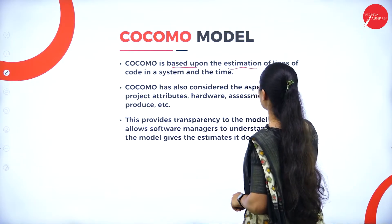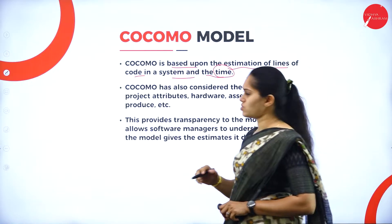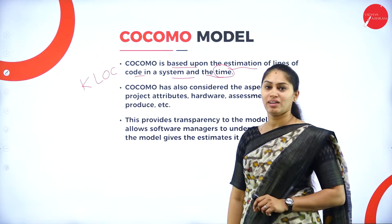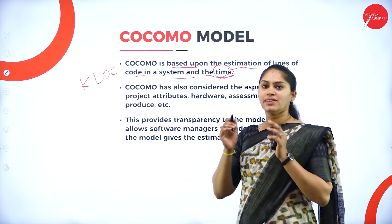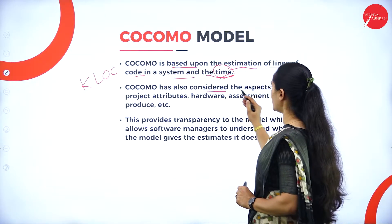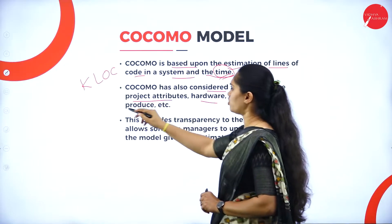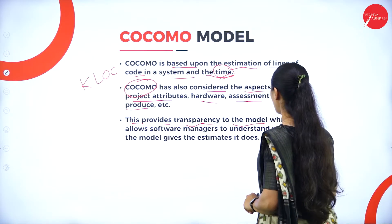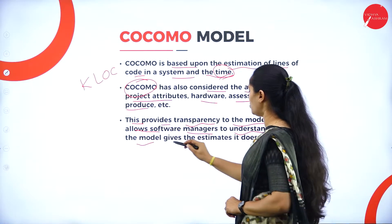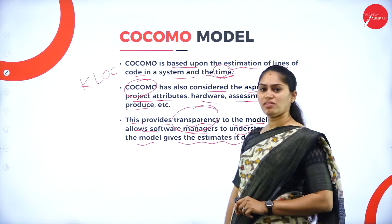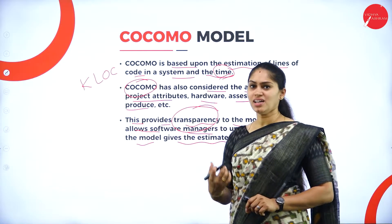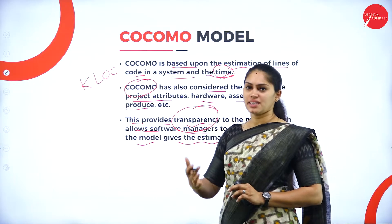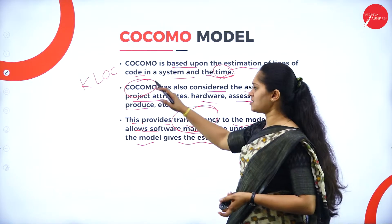In the COCOMO model, estimation will be based upon the lines of code in a system and the time. KLOC — that is 1000 lines of code — indicates how many thousands of lines of code we are taking to develop a particular project and what time it is taking. It also considers aspects like project attributes, hardware, and assessment of produce. This model provides transparency, which allows the software manager to understand why the model gives the estimate it does. Whatever functions are performed with the help of this COCOMO model, everything is visible to the software manager. Projects are categorized into three types in the COCOMO model.